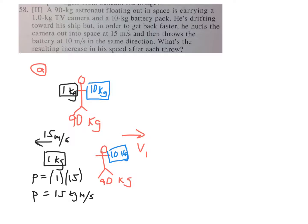We have 15 equals the mass, which is 90 plus 10 equals 100, times v1. So v1 will be 0.15 meters per second towards the right. That's the increase in speed for that first part.